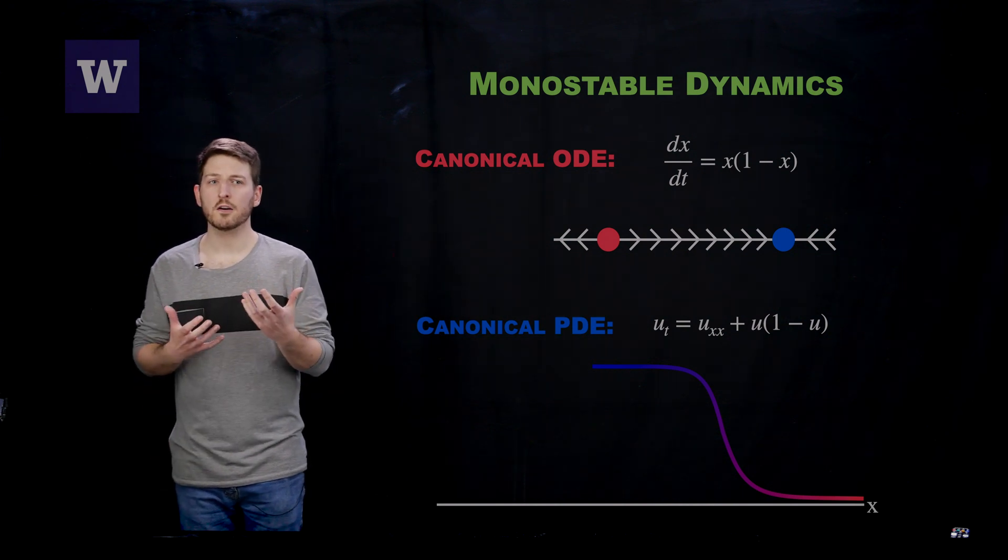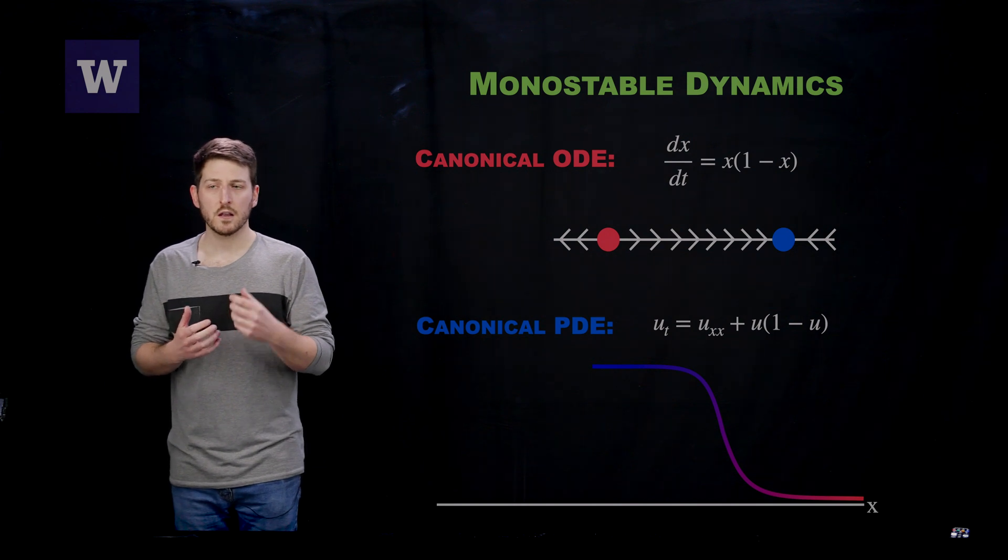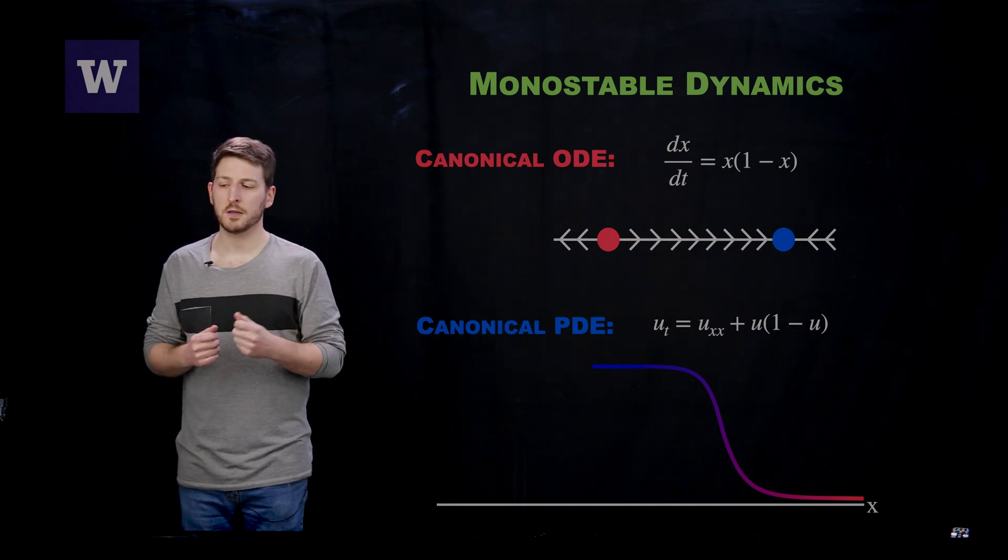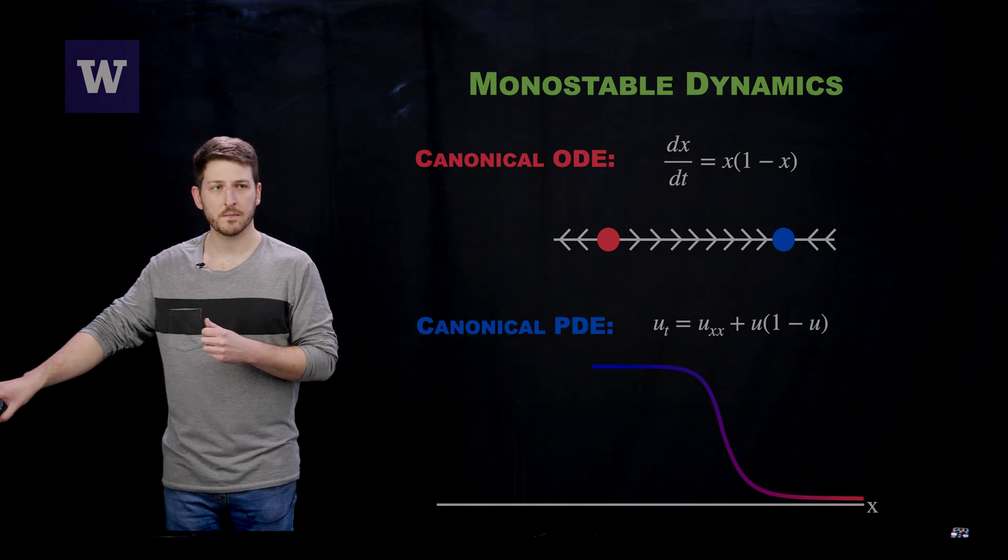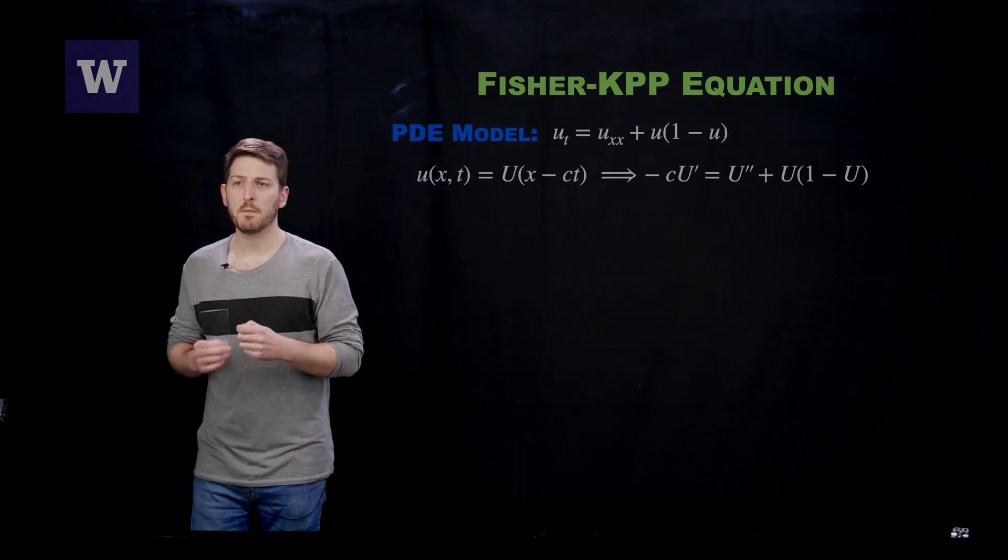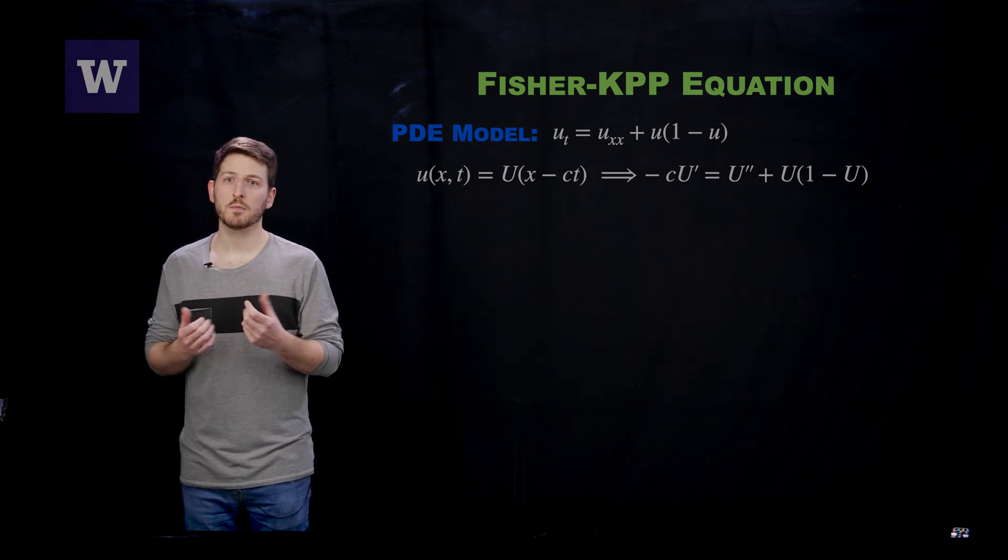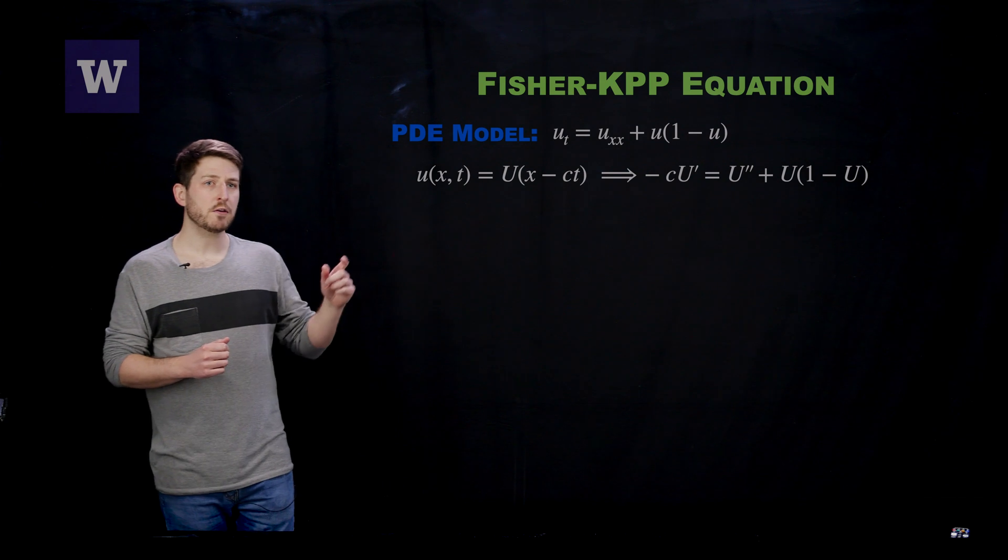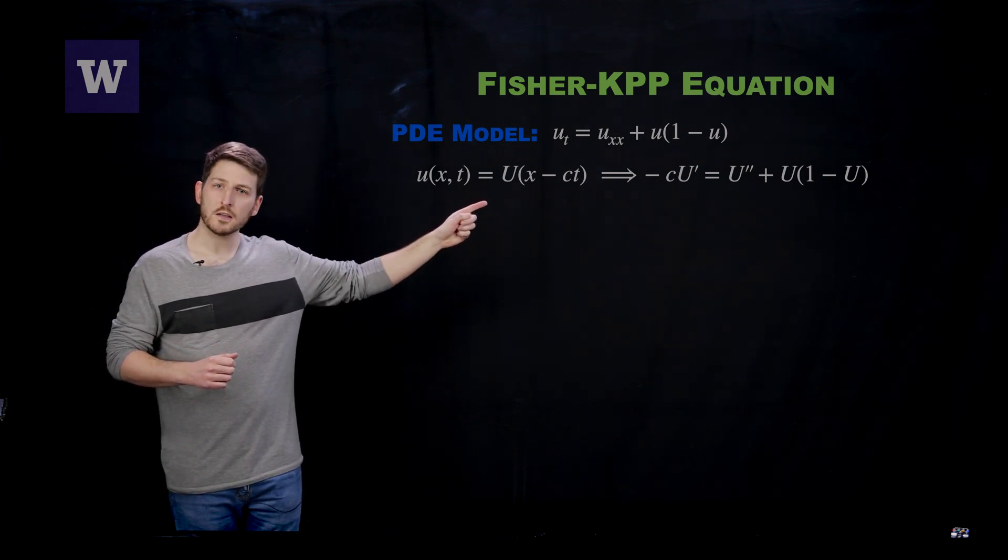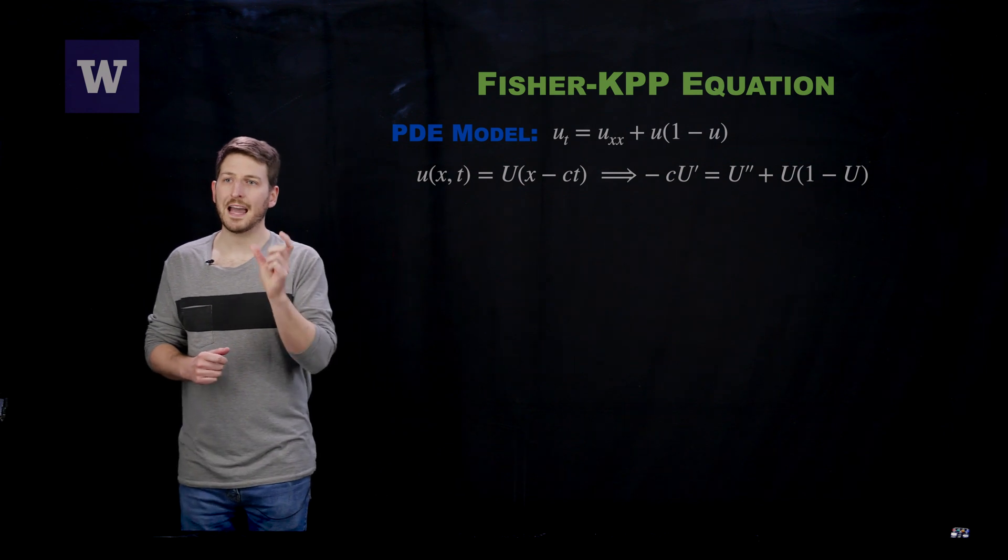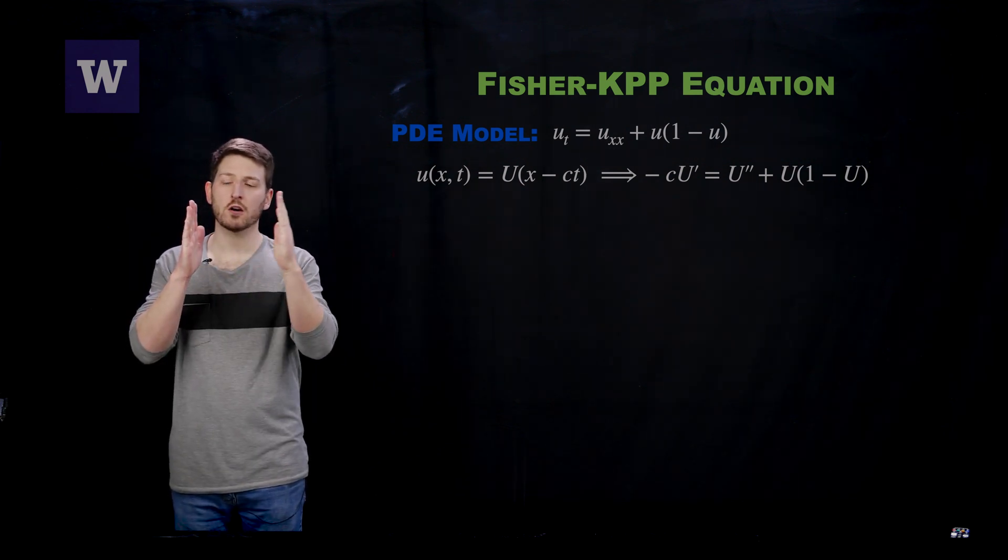Now in order to better understand monostability in partial differential equations, let's zoom in on the Fisher-KPP equation to try and better understand traveling waves here. Traveling waves are a specific type of solution to partial differential equations, and they are governed by a very specific form. Their argument is a single variable, x - ct, describing the constant movement across space.